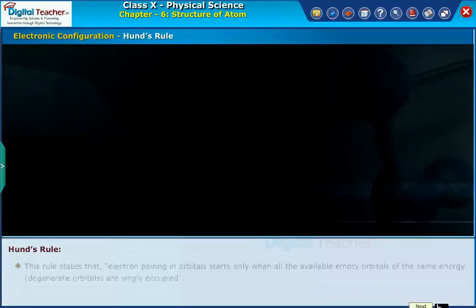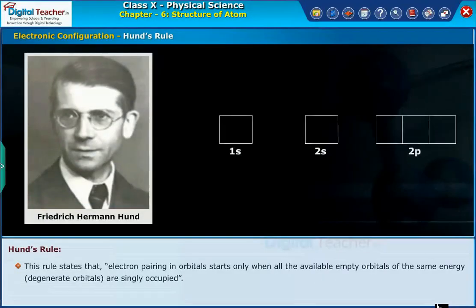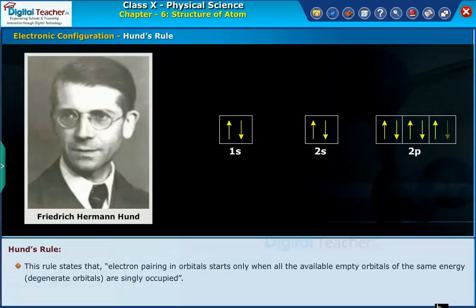Hund's rule. This rule states that electron pairing in orbitals starts only when all the available empty orbitals of the same energy, degenerate orbitals, are singly occupied.